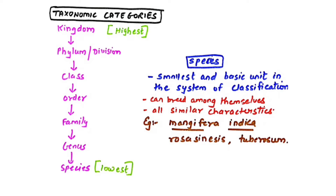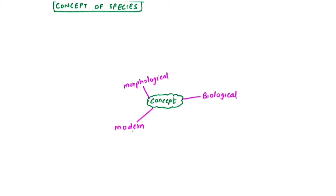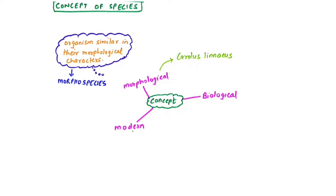The concept of species was given by three different scientists in three different formats. The first was the morphological concept, then the biological concept, and then came the modern concept. The morphological concept was given by Carolus Linnaeus, the father of taxonomy. It states that organisms similar in their morphological characters — meaning they look similar — are included under morpho-species.